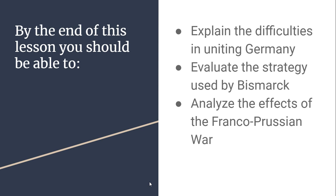That brings us to the end of the unification of Germany. Next, we're going to move to some of the old empires of Europe and talk about the growth and reform of the Ottoman Empire and the Russian Empire, as these two great eastern empires struggle to modernize, develop themselves, and take their place amongst the modern world that is developing. We'll pick that up next time. Thank you for listening.